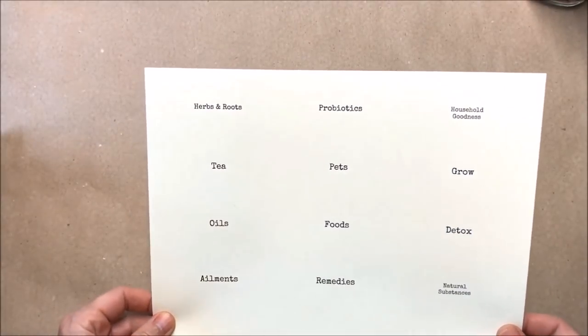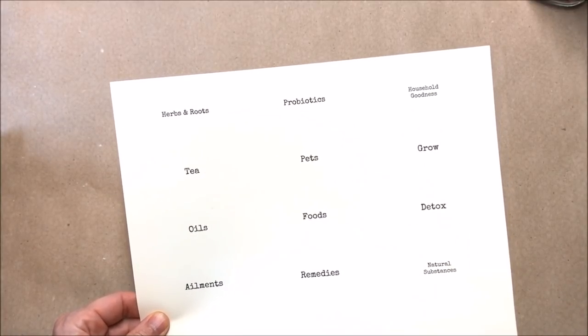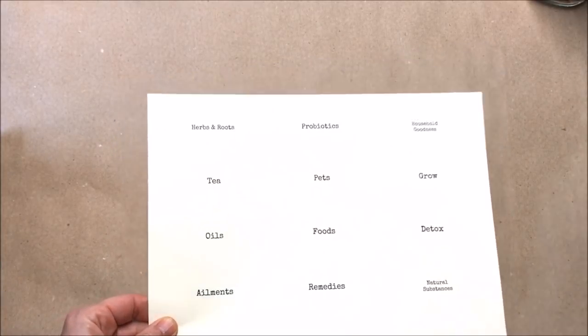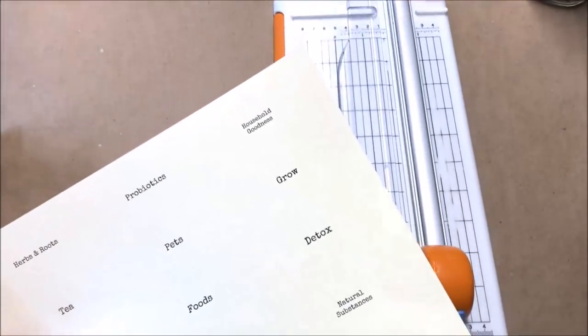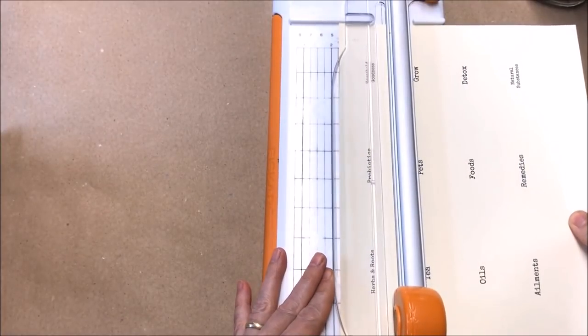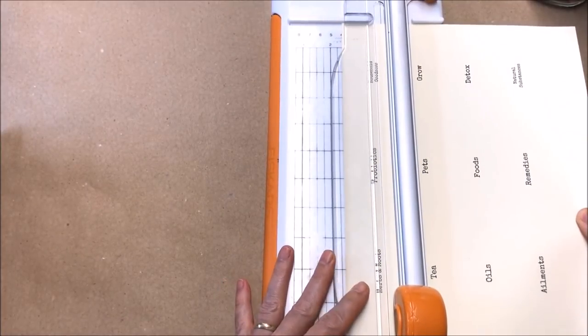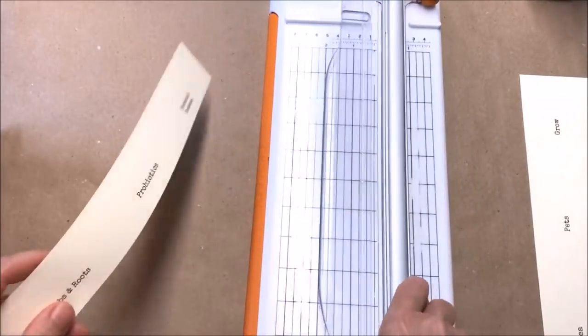I am making a journal for my daughter and the theme is healing, natural remedies, and apothecary, I guess is the word that she wanted to use. So I printed out the words on a piece of cream-colored cardstock that I want to use on her tabs. I'm simply going to cut them into strips so I have the words that I want for the first tabs.